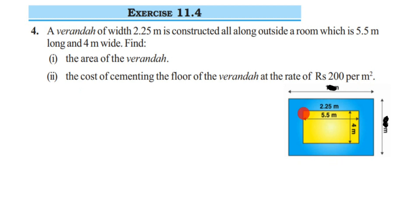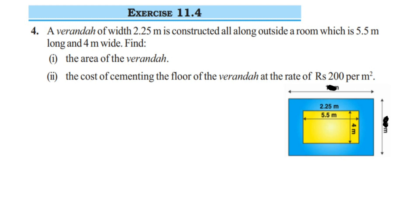In the figure, the yellow color portion represents the room, where the length is 5.5 meters and the width is 4 meters. The blue color portion is the veranda of width 2.25 meters constructed around it. We have to find the area of this blue color portion shown in the figure.